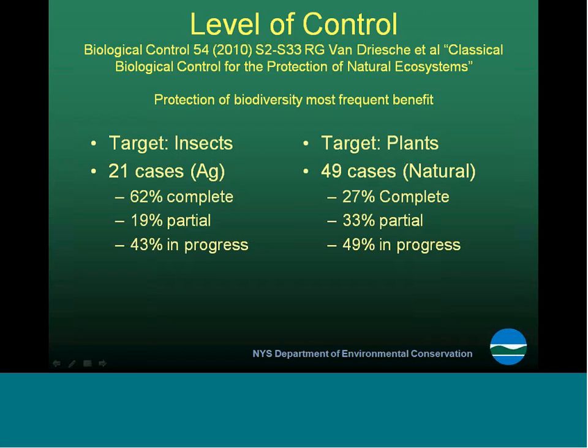A paper published in 2010 in Biological Control stated that of 70 cases reviewed, 21 were focused on agricultural targets and 49 on natural environment targets. So while both agricultural and natural resources use biocontrol, there are about twice as many biological control projects currently being implemented for natural resource reasons. A considerable number of those projects are still in progress and have not met their official objectives.